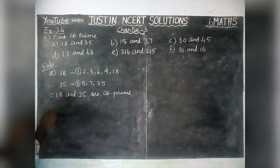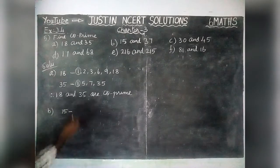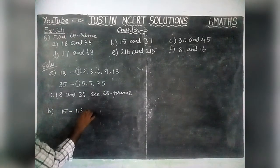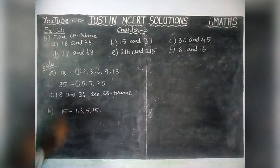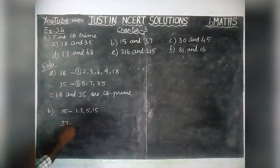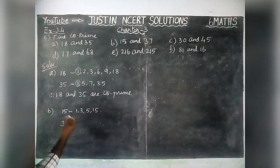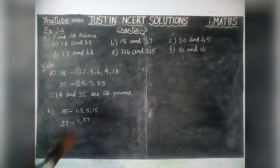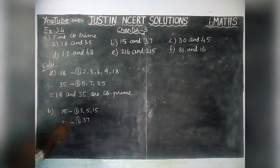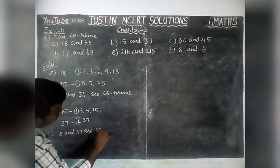Next, we are going to find Part B: 15 and 37. Factors of 15 are 1, 3, 5, and 15. Now, 37 is a prime number, so 1 and 37 are the only factors of 37. Here also, the common factor is only 1. Therefore, 15 and 37 are co-prime numbers.